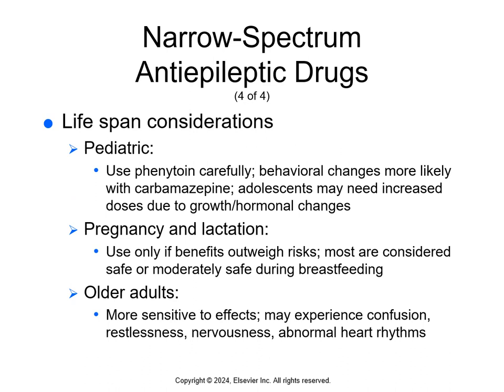In children, phenytoin should be used carefully. Behavioral changes are more likely with carbamazepine, and adolescents may need increased doses due to growth and hormone changes. In pregnancy and lactation, these drugs are used only if the benefits outweigh the risks. Some infants have been born with low birth weight, small head size, skull or facial defects, underdeveloped fingernails, and delayed growth when mothers took large doses during pregnancy. Valproic acid during pregnancy has been associated with developmental defects, low IQ, birth defects, congenital anomalies, and liver damage to the infant. Older adults are more sensitive to the effects and may experience confusion, restlessness, nervousness, and abnormal heart rhythms or chest pain. Teach them to monitor their pulse at least twice a day and report abnormalities to the prescriber.